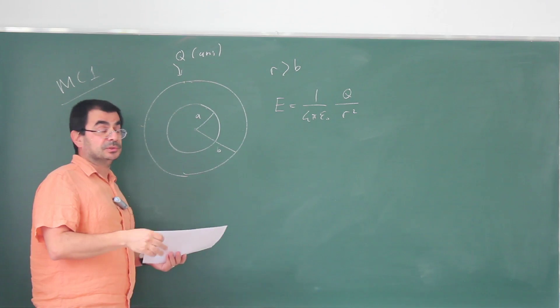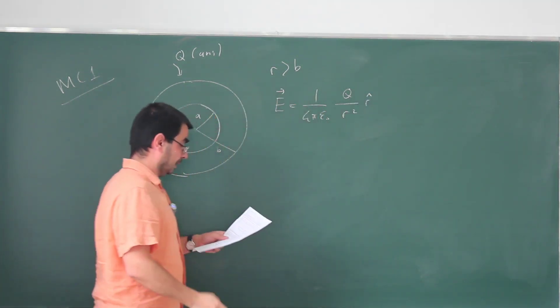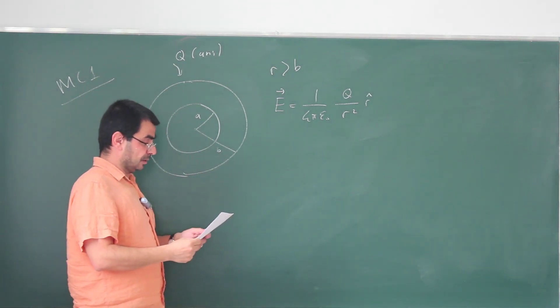The electric field, because this is positive charge, is going to be outward. So to give its direction, we can put an R hat, and this will be choice A.